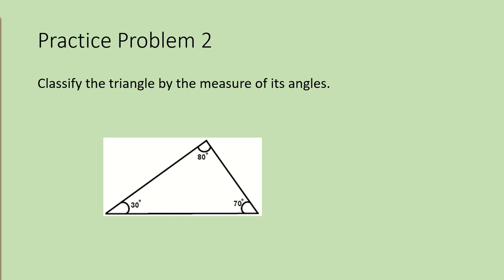Let's look at another problem. You will not need to use your index card since this triangle has the measurements labeled for each angle. Notice that all angles are less than 90 degrees. Can you identify what type of triangle this is? If you said acute, you are correct.